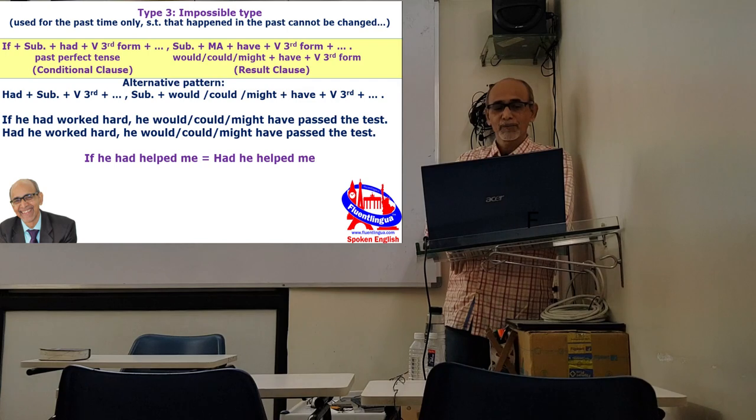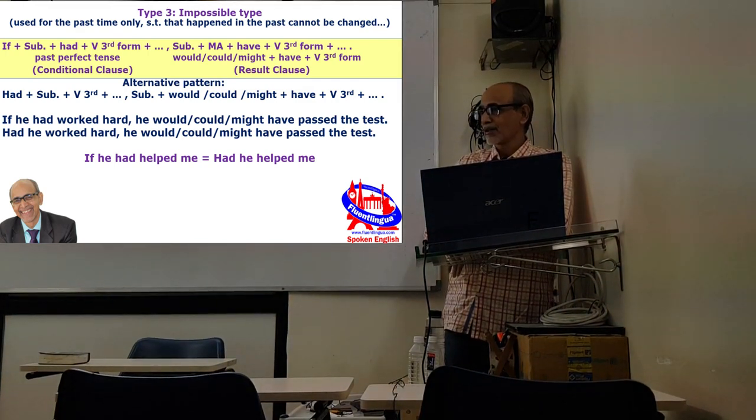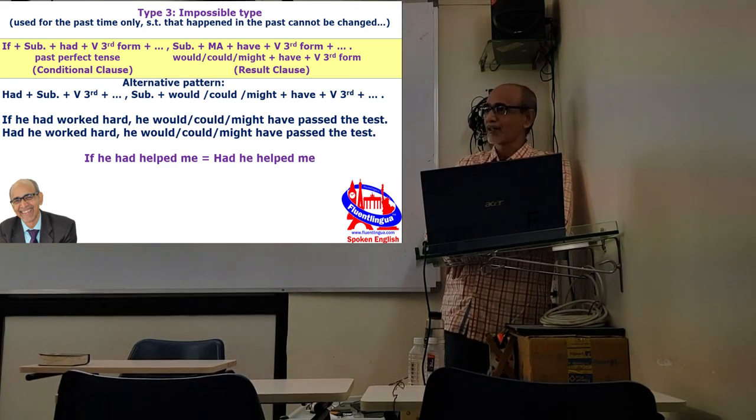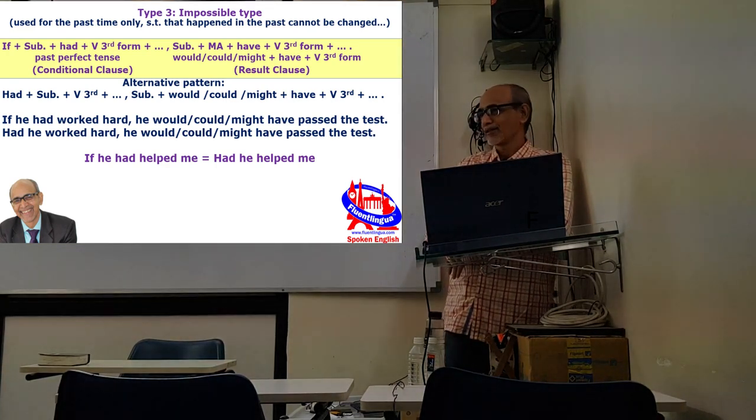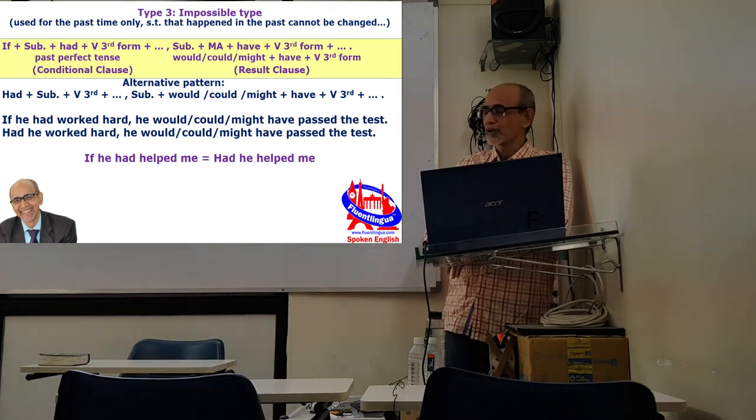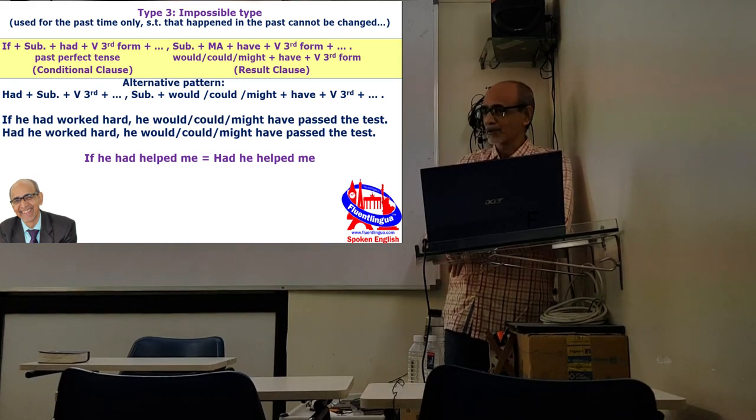For example, if he had worked hard, he would have passed. If he had worked hard, that means he did not work hard and he has actually failed. But still you make a sentence: if he had worked hard, he would have passed. And here in case of would, you can also use could, he could have passed. He had the ability but he did not use it. Or he might have passed, perhaps he would have passed.